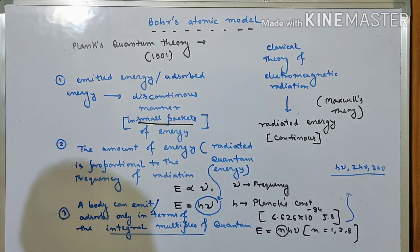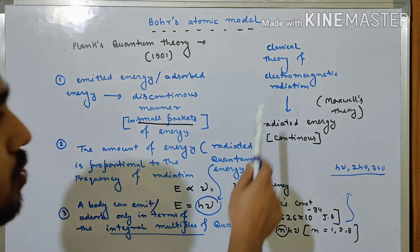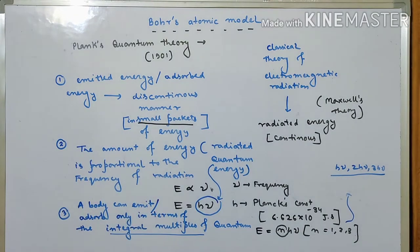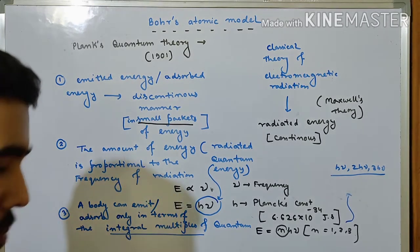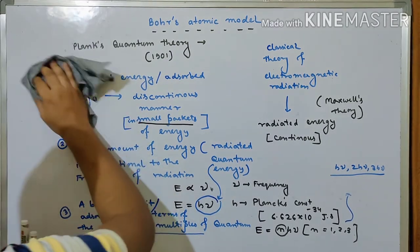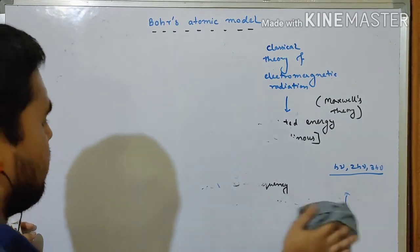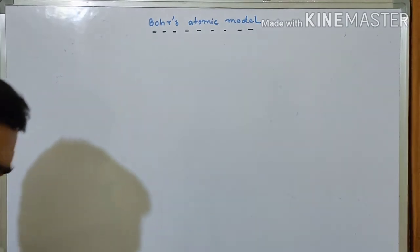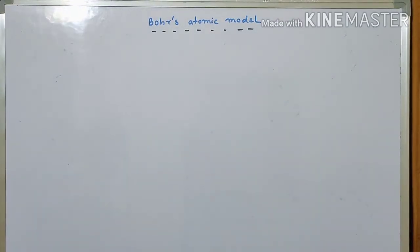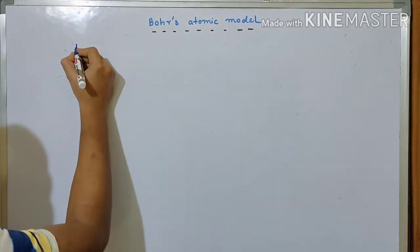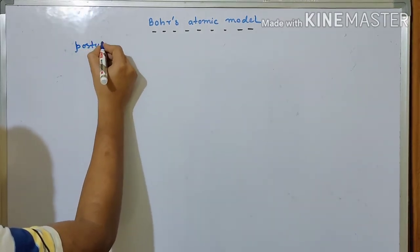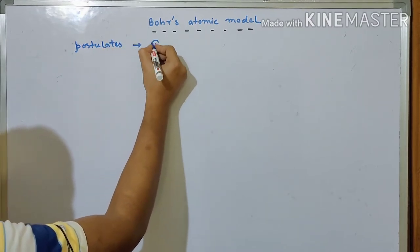Based on Planck's quantum theory, and understanding the difference with Maxwell's theory, the time has come to move into Bohr's atomic model. So the next topic will be Bohr's atomic model. Now we are going to go through Bohr's atomic model. It has some postulates — mainly three postulates — so let us write those down.